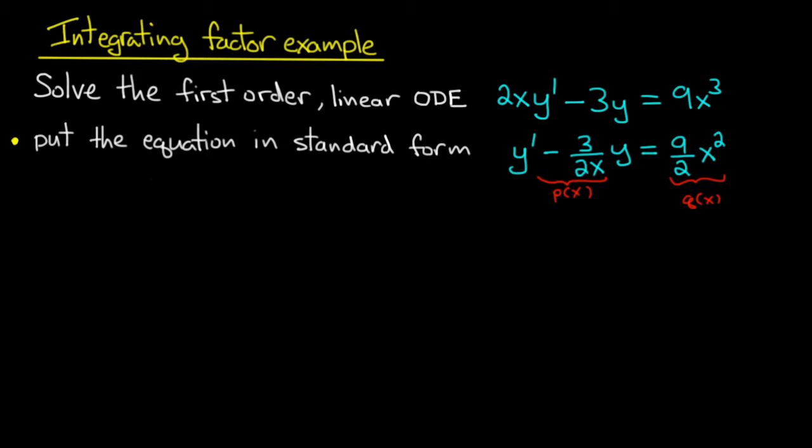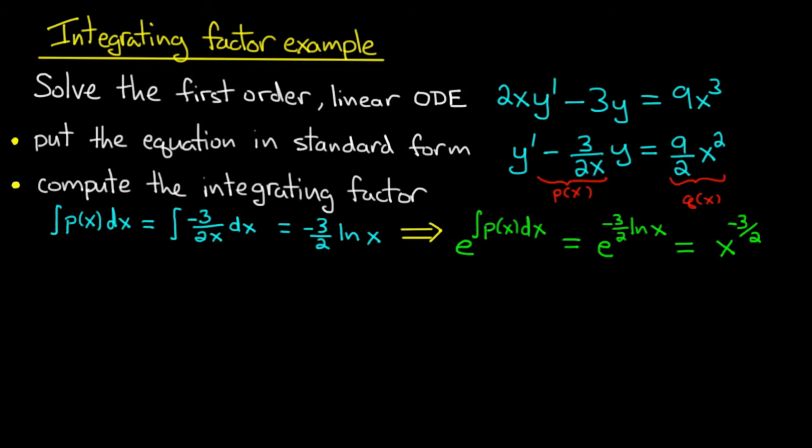Now the equation is in standard form, so the next step will be to compute the integrating factor. Remember, the integrating factor is e to an antiderivative of p. I choose which antiderivative; it doesn't matter which one. So the first thing to do is compute an antiderivative of p. The integral of p dx, that's the integral of -3/(2x) dx, and that general antiderivative is (-3/2)ln|x| plus a constant. I'll just choose that constant to be 0 since that's the easiest choice.